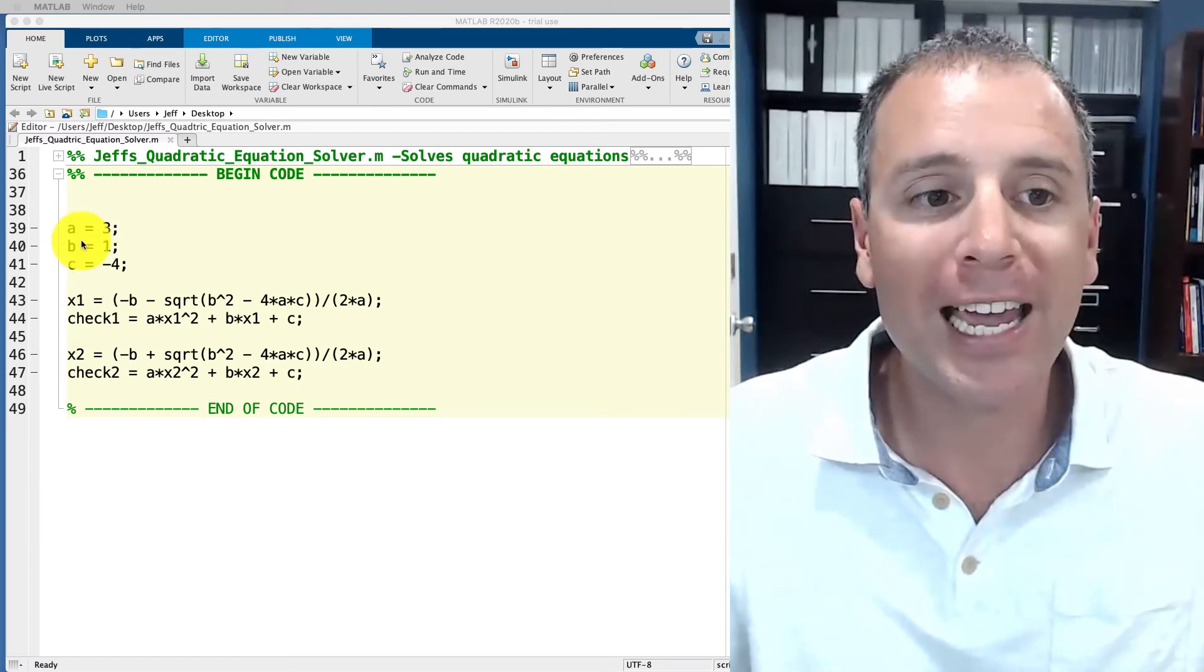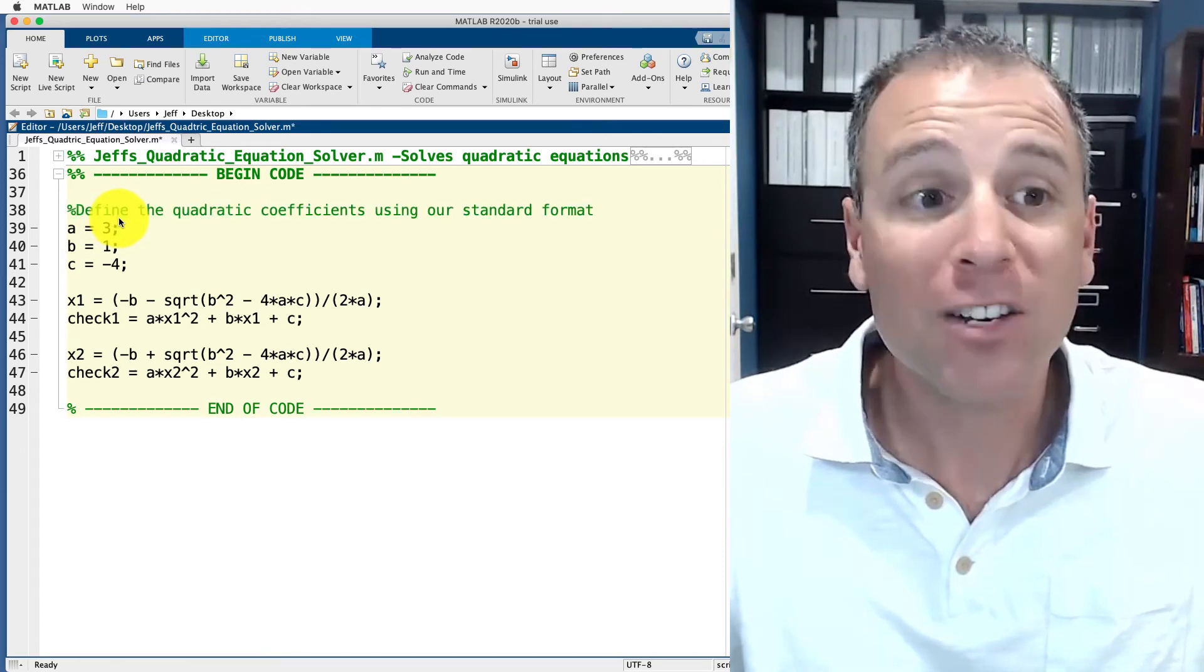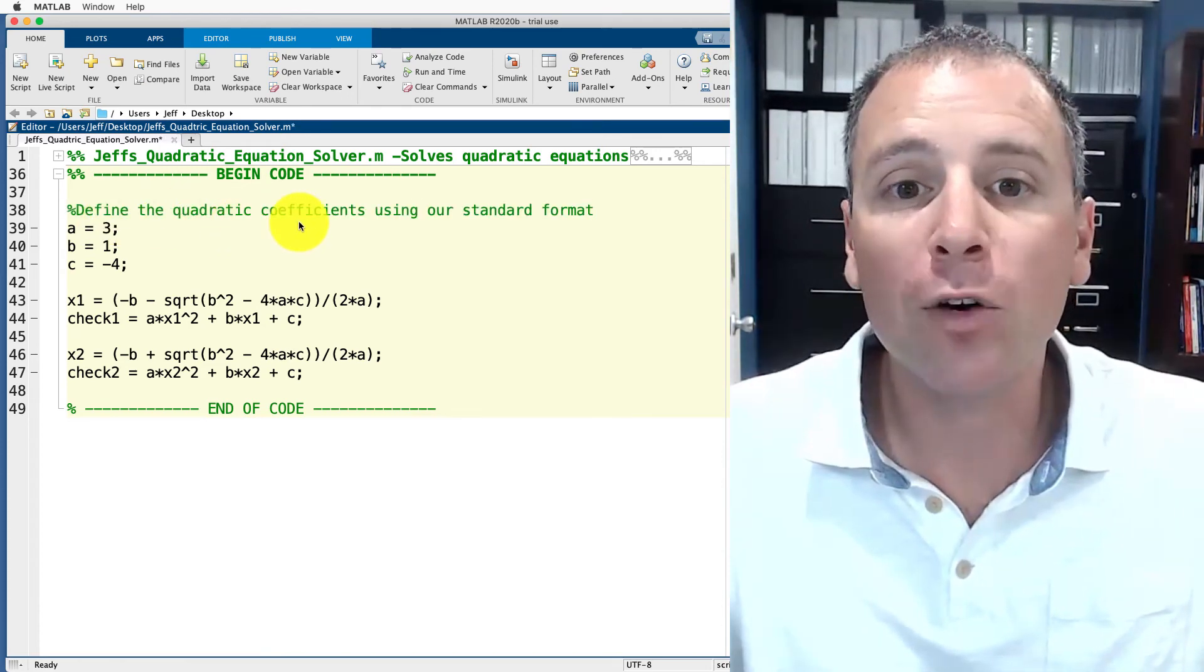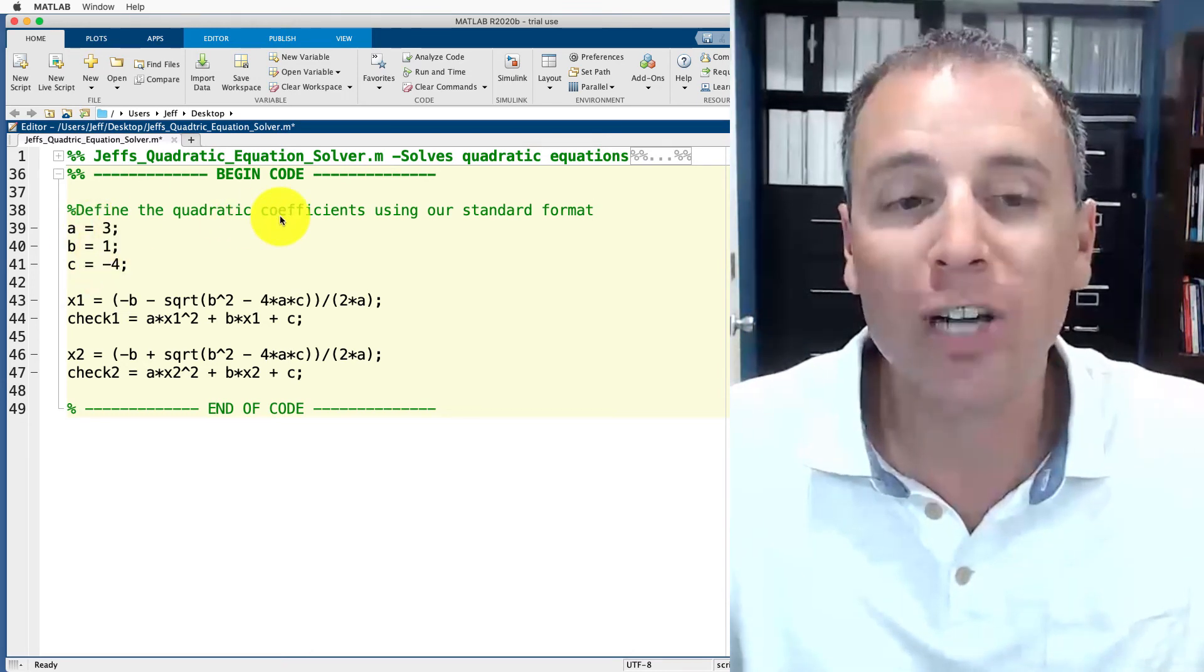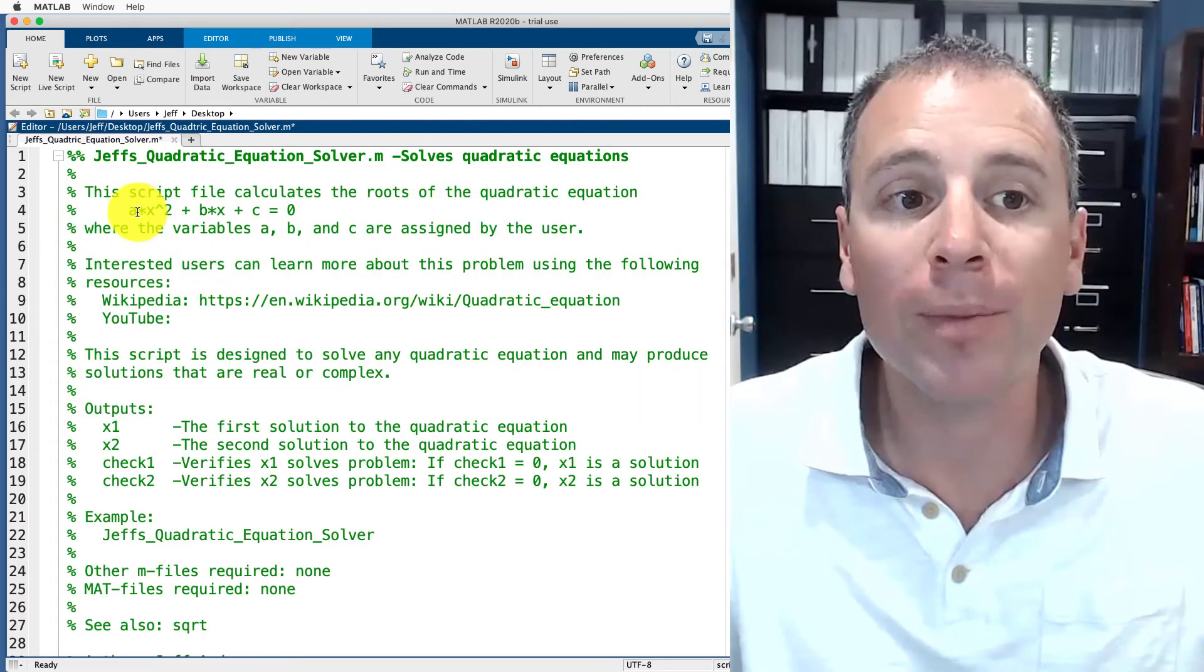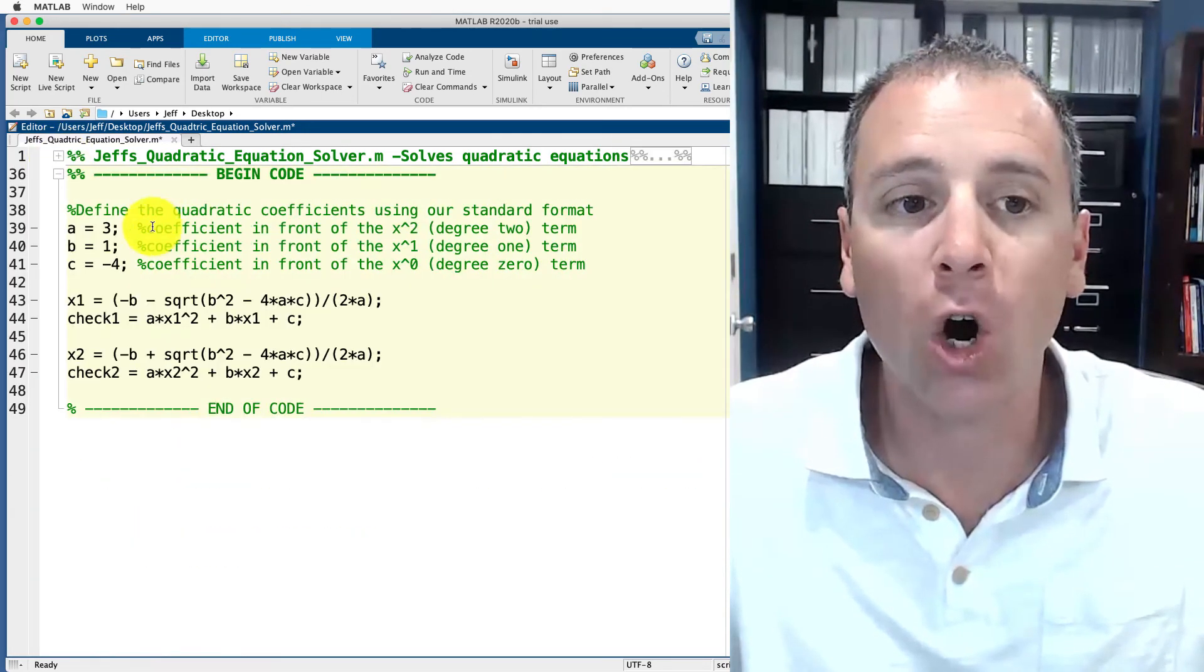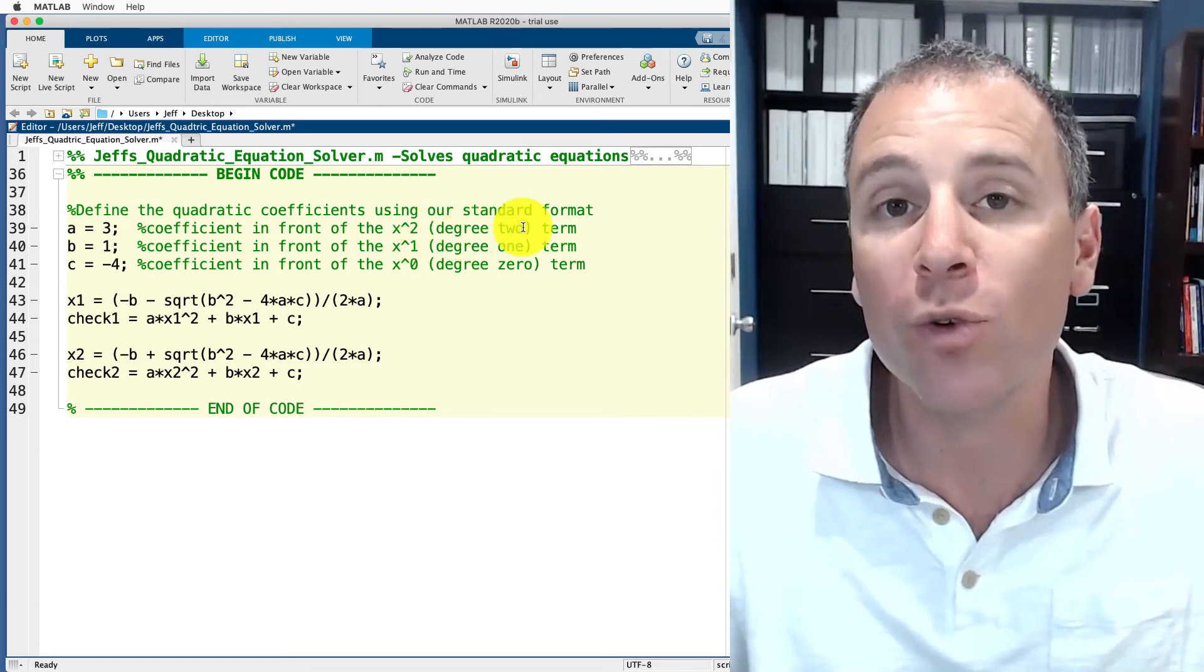Let's begin here. We've declared variables A, B, and C. What are those variables designed to do? Let's write a comment. These define quadratic coefficients using our standard format, but there's more information in these variables than just quadratic coefficients. Specifically, I know that the coefficient A is the term in front of the x squared. So I'm going to call A the coefficient in front of x squared, also known as the degree two term.